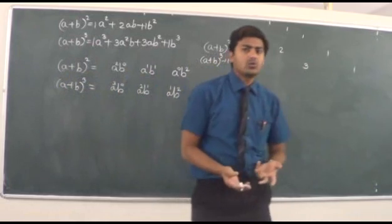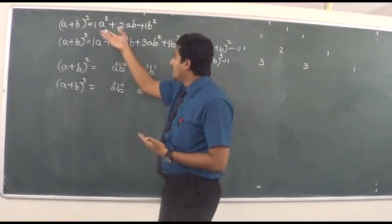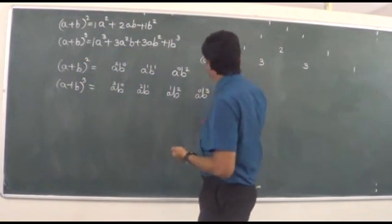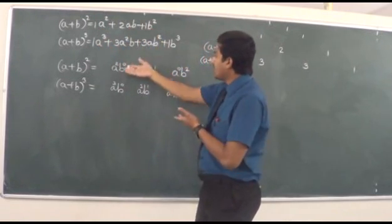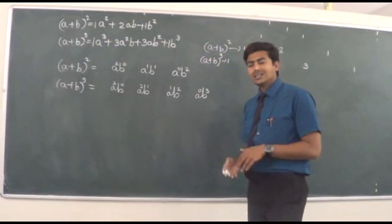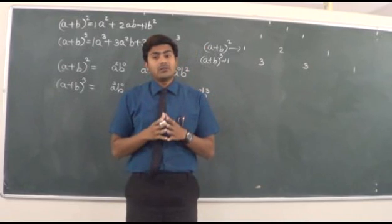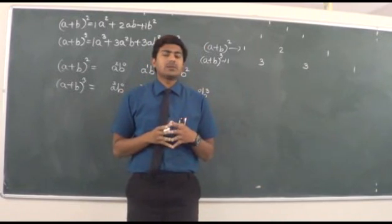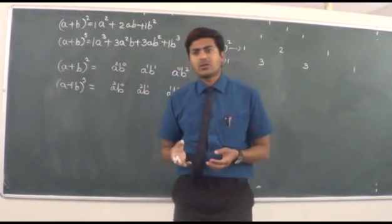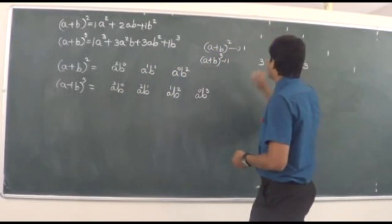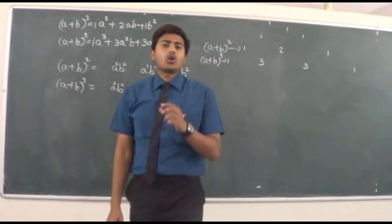We now know how to calculate a binomial expansion — using Pascal's triangle for coefficients and the power pattern for the variable terms. However, when the power increases, like (a+b)²⁵ or (a+b)³⁰, it is not feasible to use Pascal's triangle. For such cases, we use combinations.